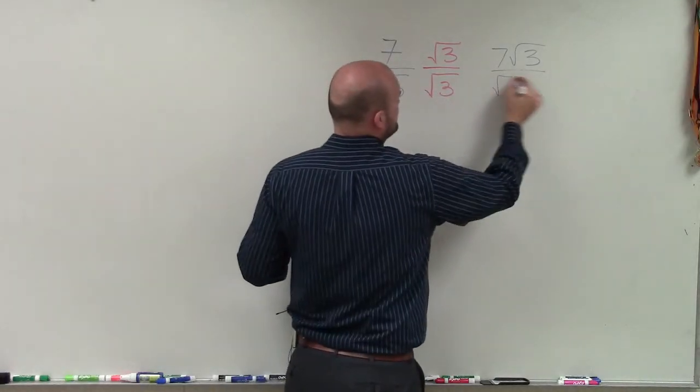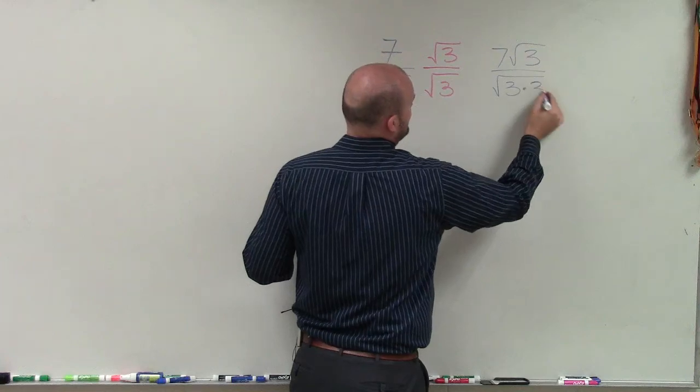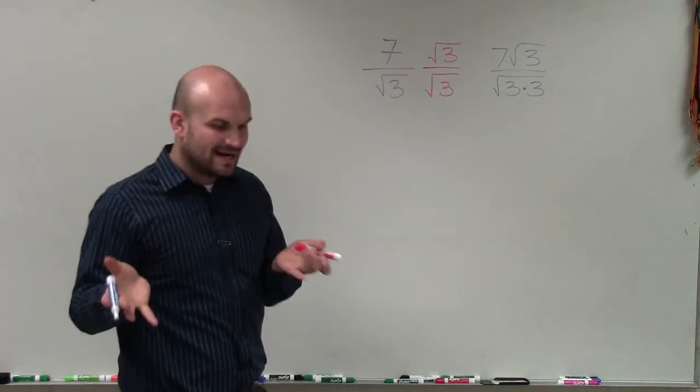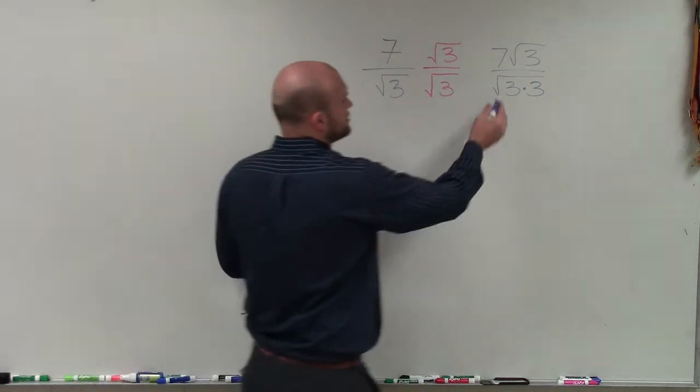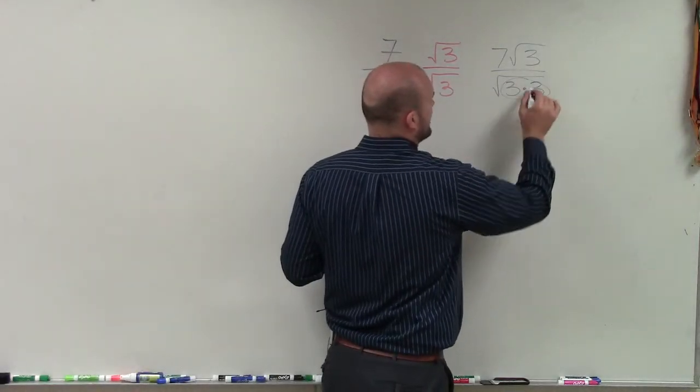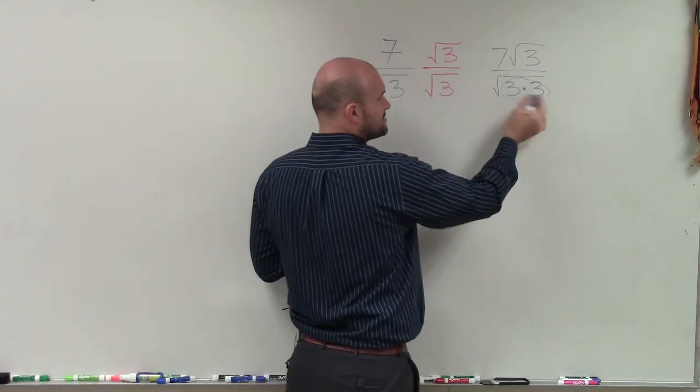When you're multiplying radicals, that becomes square root of 3 times 3. Now remember, when we went into simplifying radical expressions, we know that with square roots, we could pull out pairs. So the square root of 3 times 3 is just going to be 3.